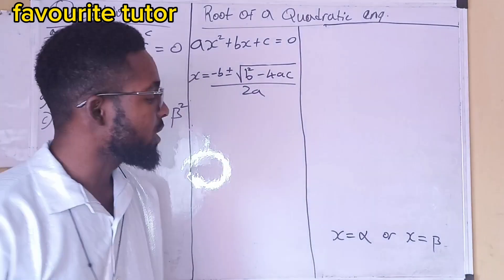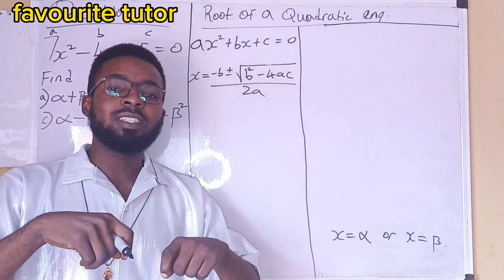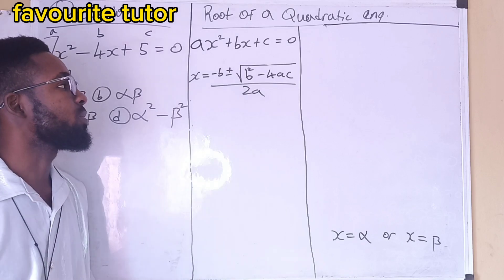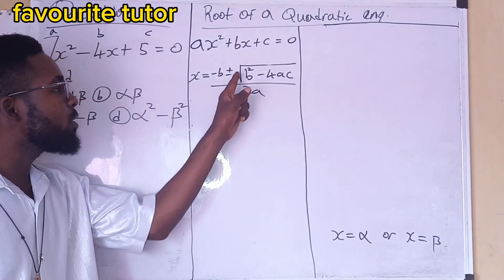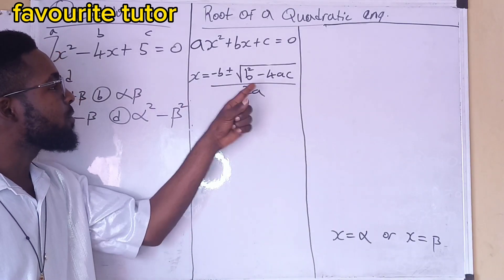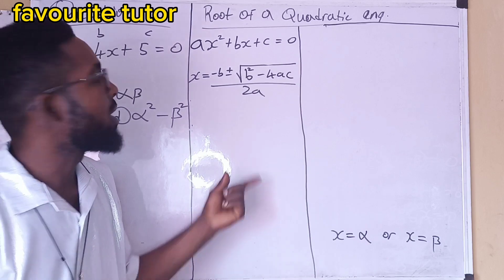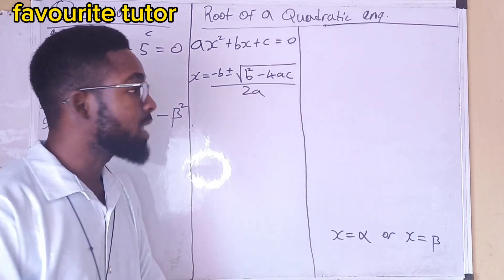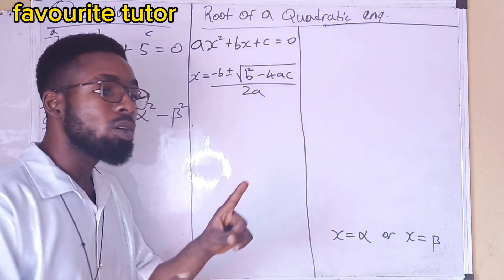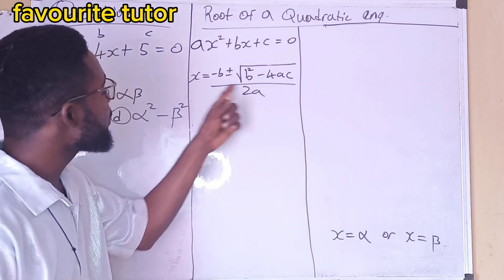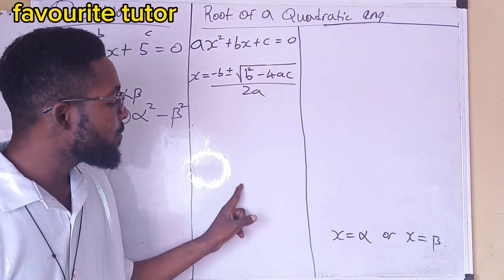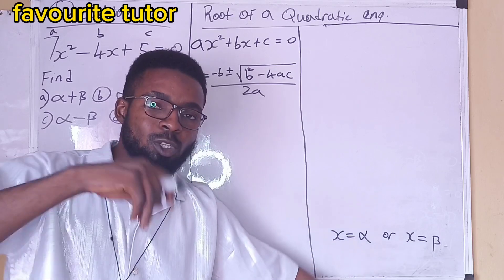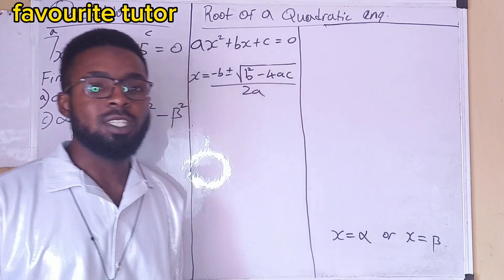These are the roots of the equation — the answers to the quadratic equation. So when we solve, using the formula or any other method like factorization or completing the square, we have two values for x. The values for x are alpha and beta, which are the roots of the equation.